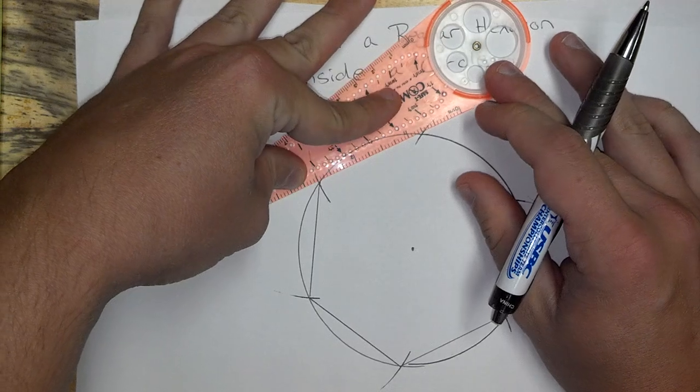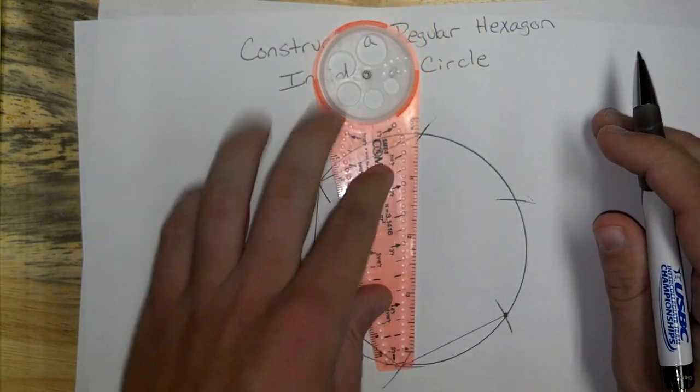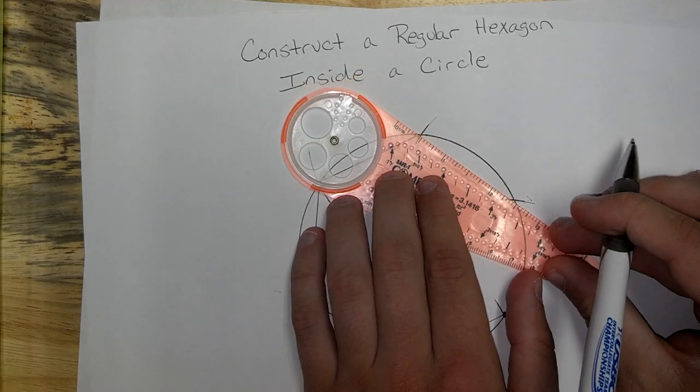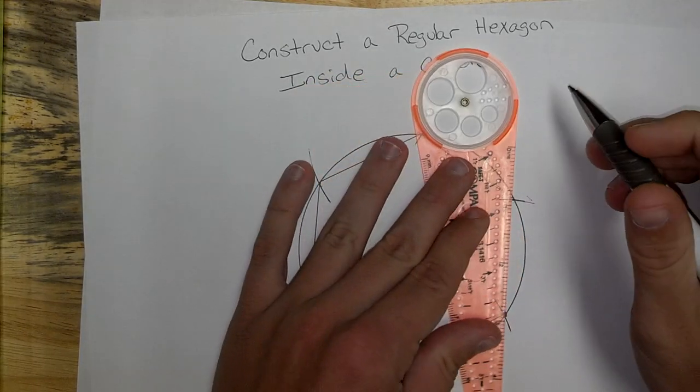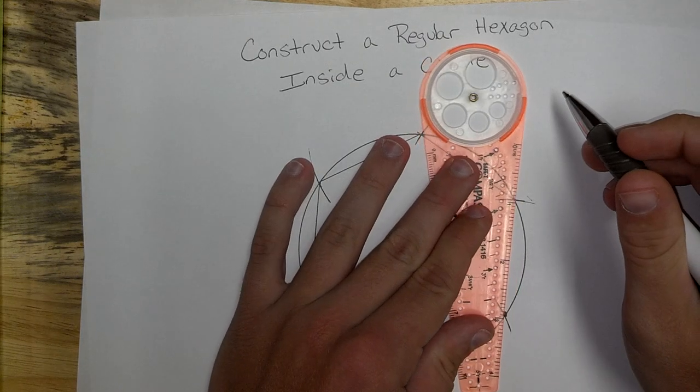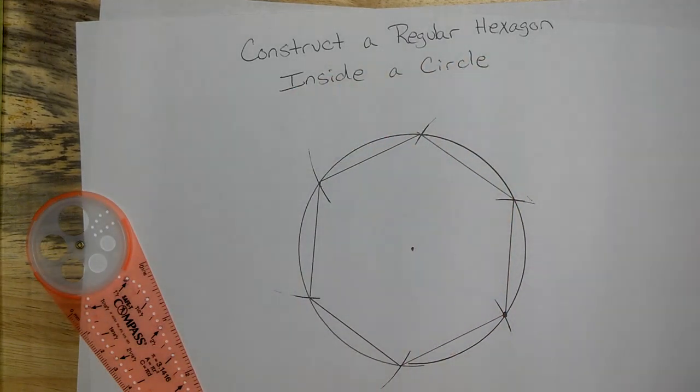Go ahead and finish connecting the dots, and you will end up with a very nice regular hexagon. The cool thing about this is that you've just created this inside of a circle. And there you go.